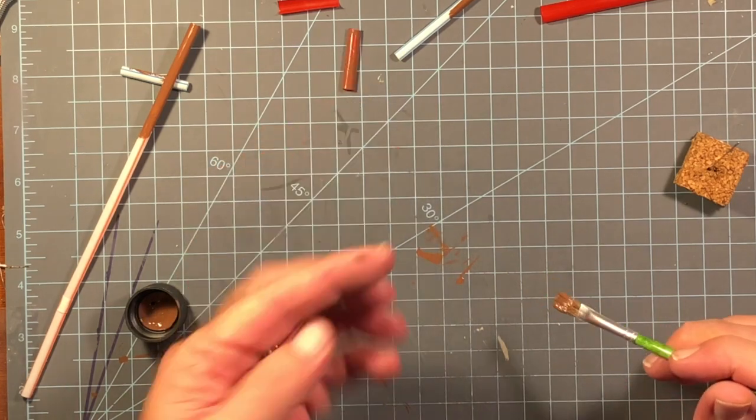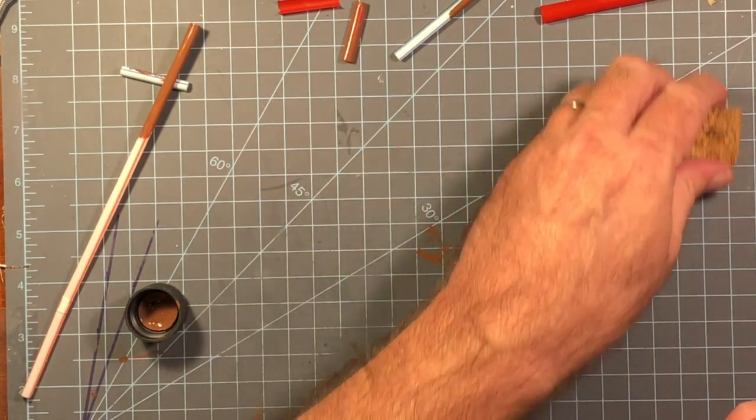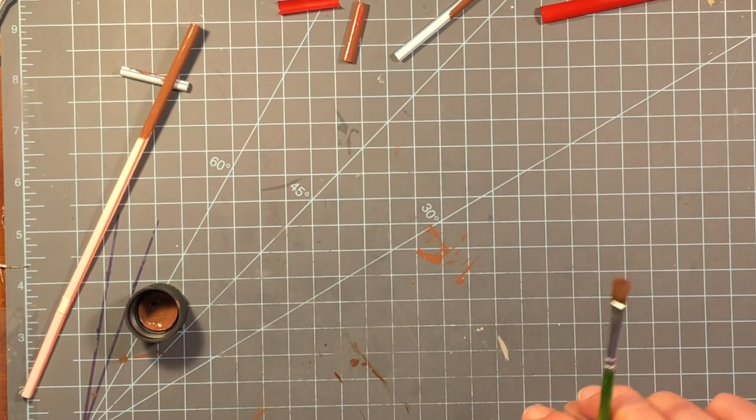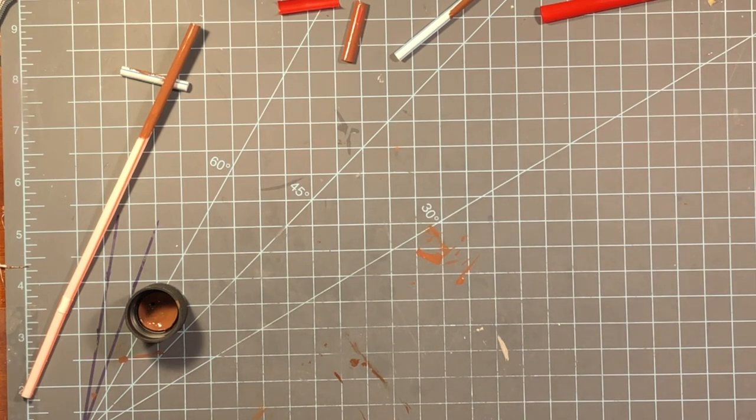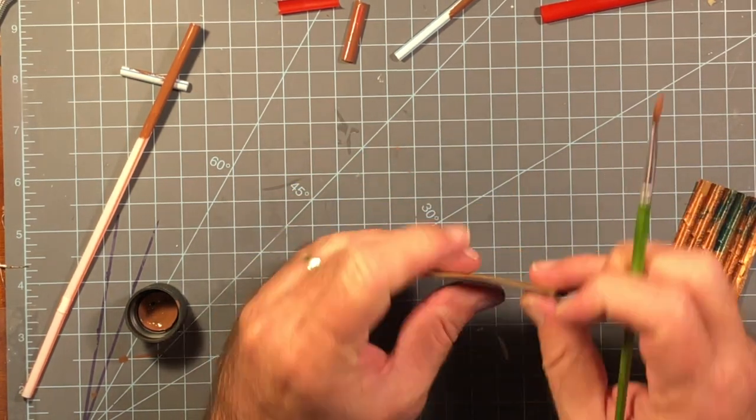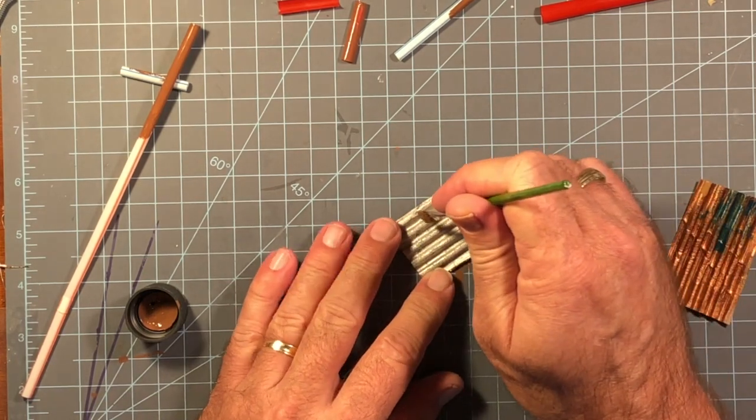Another idea I had for roofing was using cardboard. I took cardboard and just peeled off one side of it and then painted it. I'll paint this brown.